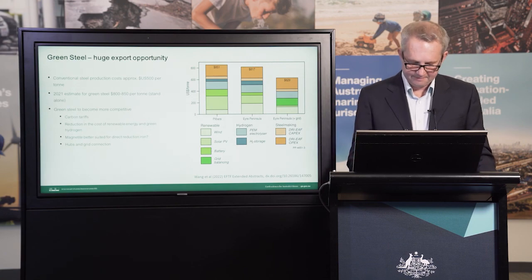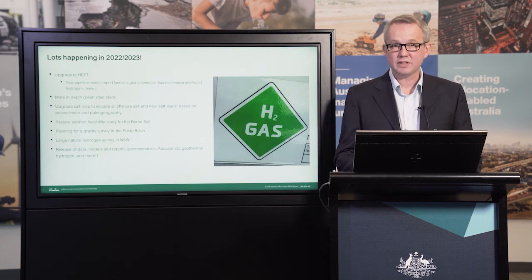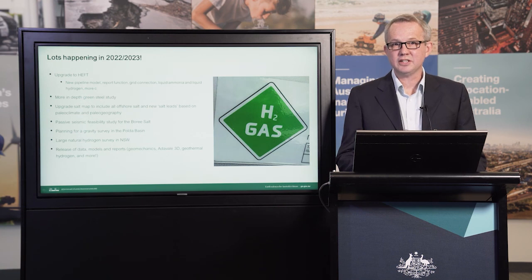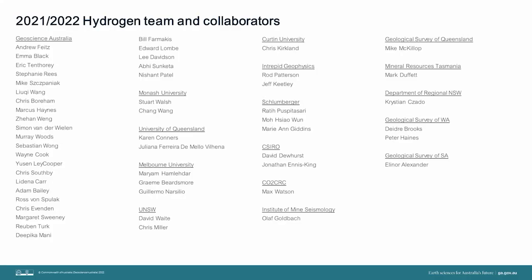That's a brief summary of our work over the last 12 months. There are a few things I didn't get time to mention, including our geothermal hydrogen review with the University of Melbourne, a natural hydrogen from iron minerals review with the University of New South Wales, and salt dating work with Curtin University and the Geological Survey of Western Australia. Keep an eye out on the EFTF website for product releases associated with this work. There is an ambitious work program ahead, including further HEFT upgrades, building on the preliminary green steel work, further salt studies and release of an updated salt map, more geomechanical studies and an ambitious geological hydrogen field campaign. A big thank you to the 2021-2022 hydrogen team and our collaborators, and thank you for listening.